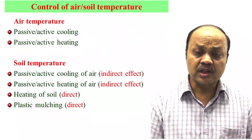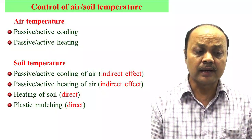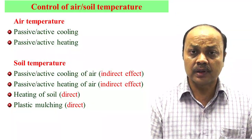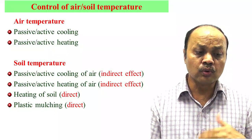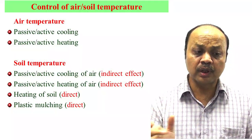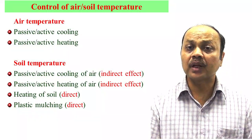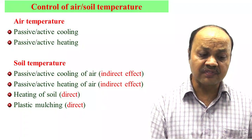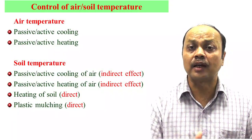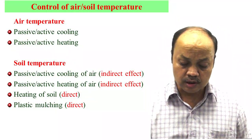For controlling air and soil temperature separately, we will discuss later how to control air temperature in a poly house. In soil temperature control, depending on air temperature, it indirectly affects soil temperature. Apart from that, different heating mechanisms can be used to heat the soil in greenhouses. Plastic mulching — already discussed — can be used to increase or decrease soil temperature depending on the color, thickness, and other parameters.